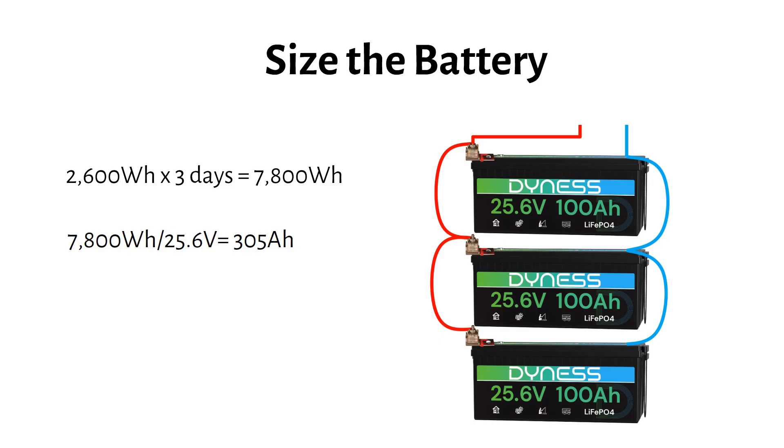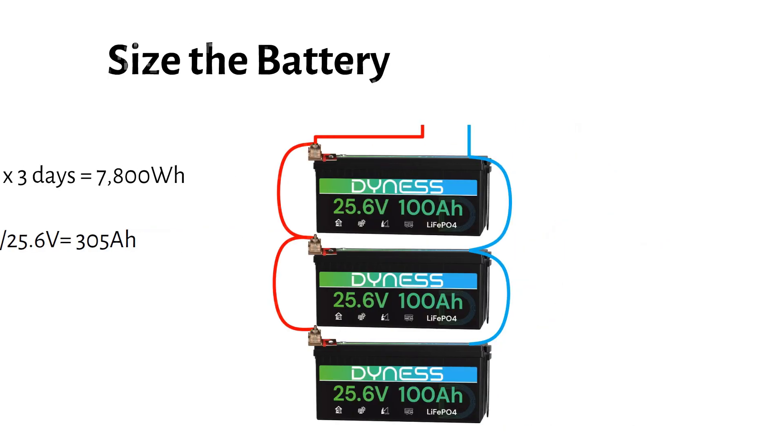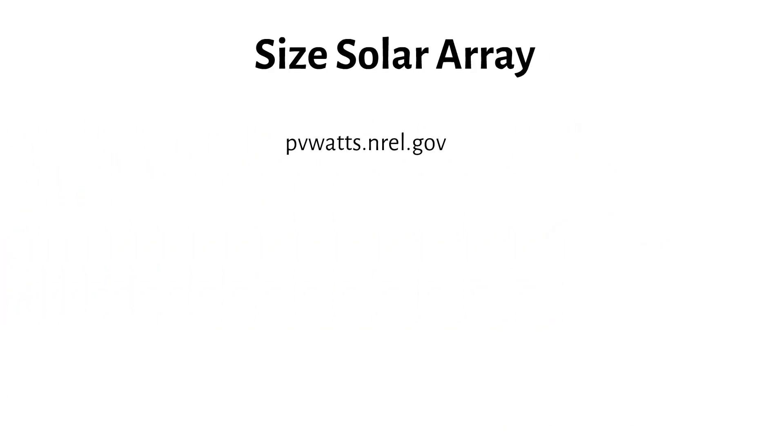I prefer a 24V battery over two 12V batteries in series because I don't need a separate balancer, and batteries in parallel will balance themselves. Next, I will size a solar array.